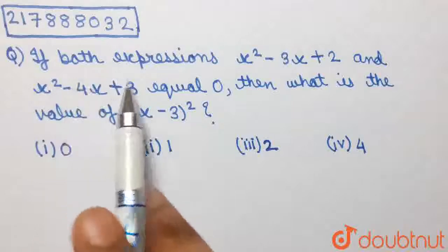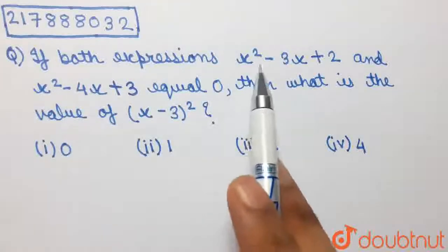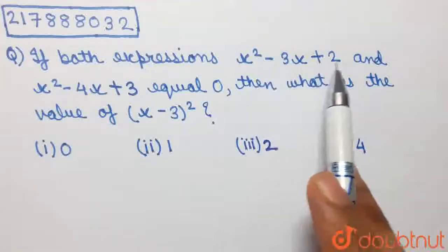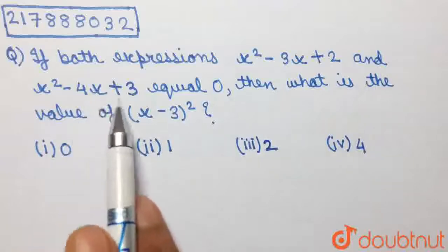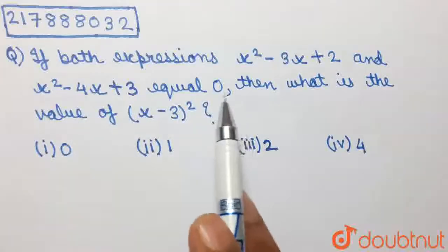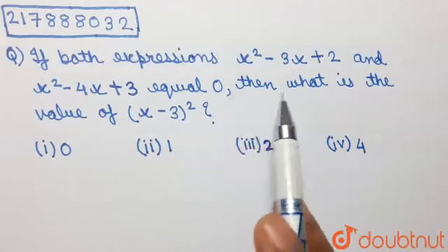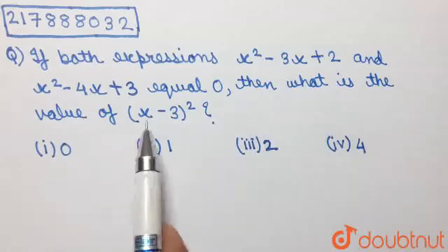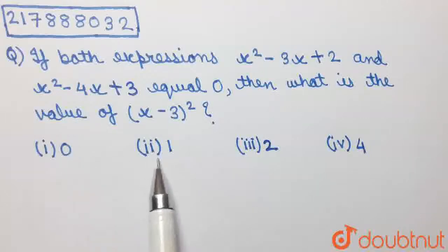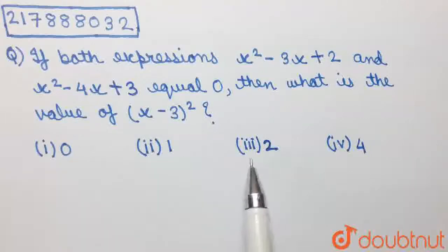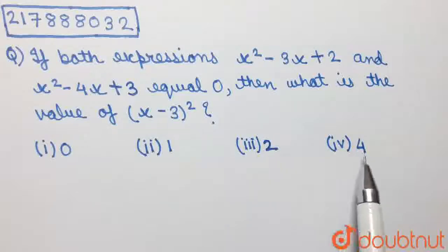If both expressions x²-3x+2 and x²-4x+3 equal 0, then what is the value of (x-3) whole square? Option 1: 0. Option 2: 1. Option 3: 2. Or option 4: 4.